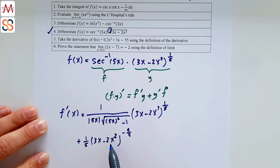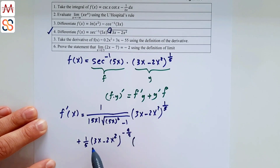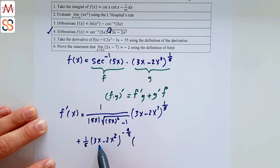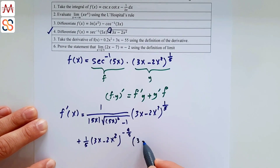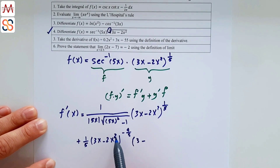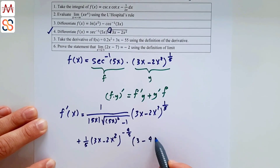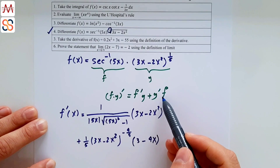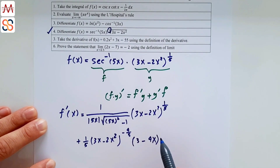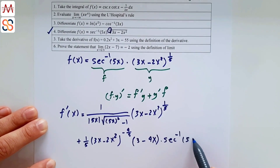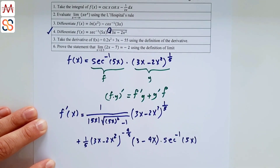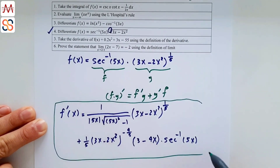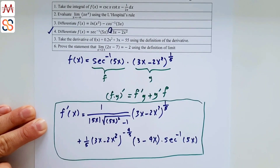Since 3x - 2x² is not a simple variable, apply the chain rule: multiply by the derivative of 3x - 2x², which is 3 - 4x. This entire g' term is multiplied by the original first function arcsec(5x). This is the final answer for question 4.